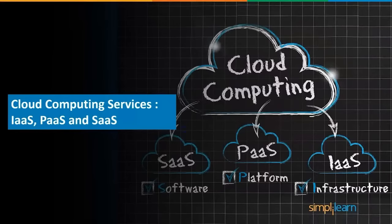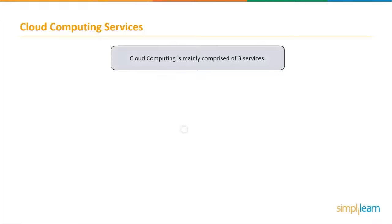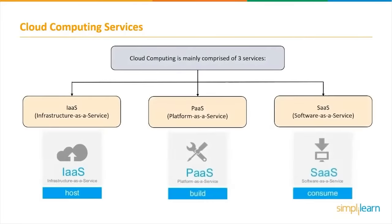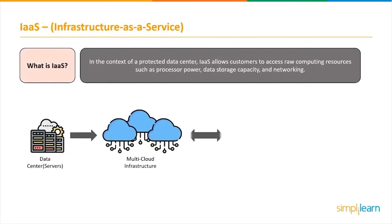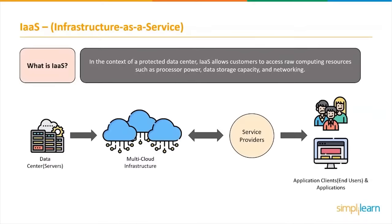Cloud computing, unlike a microprocessor, is not a single piece of technology. Rather, it's a system made up of three services: infrastructure as a service, platform as a service, and software as a service. What is infrastructure as a service? It is a type of cloud computing that uses the internet to provide virtualized computing resources. The cloud provider controls IT infrastructure such as storage, server, and networking resources, and offers them to subscribing companies via virtual machines accessible over the internet. For businesses, it can provide numerous advantages including the ability to make tasks faster, easier, more flexible, and less expensive.